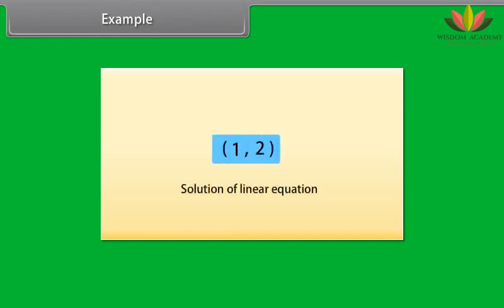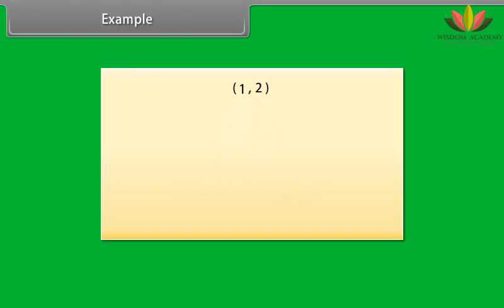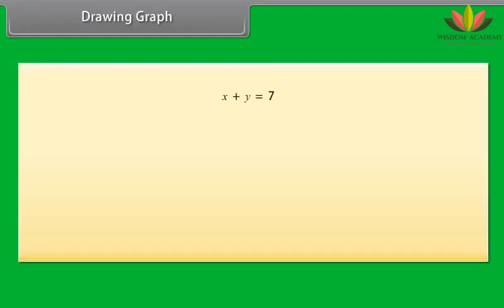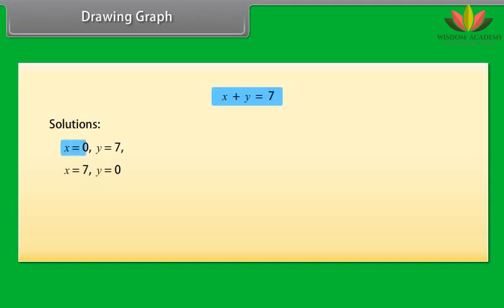Let us go through an example. Take the point (1, 2). We'll find the equation of a line on which it lies. Since (1, 2) is a solution of a linear equation, we look for any line passing through (1, 2). One example is X plus Y equals 3, because putting X as 1 and Y as 2 gives 3. Other examples are Y minus X equals 1, and Y equals 2X. In fact, there are infinitely many linear equations satisfied by the coordinates of the point (1, 2).